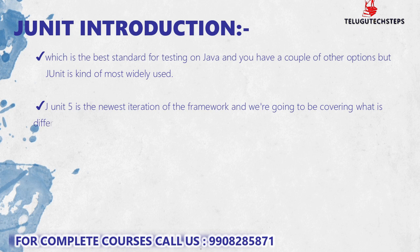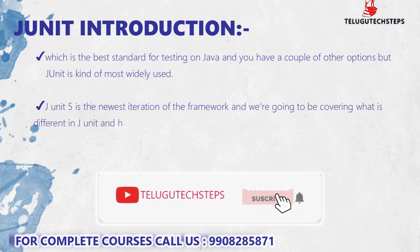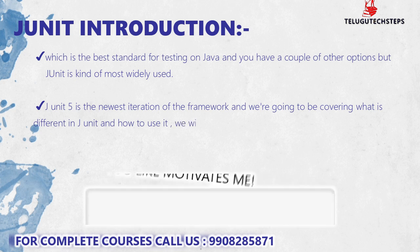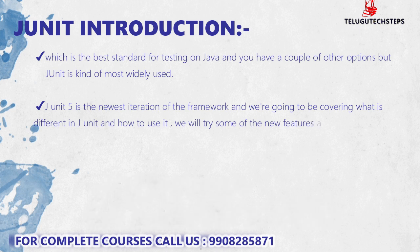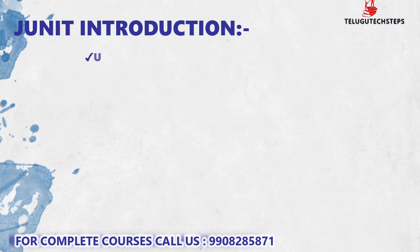First, we will see what is JUnit, what are the different versions, and what is the updated version. What is the difference between the JUnit versions, and what are the upgrades from earlier versions to JUnit 5? And then after, we are going to see the architecture of JUnit 5 — what are the changes in the JUnit 5 architecture.